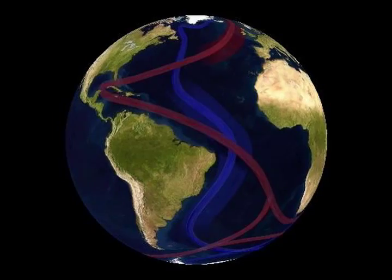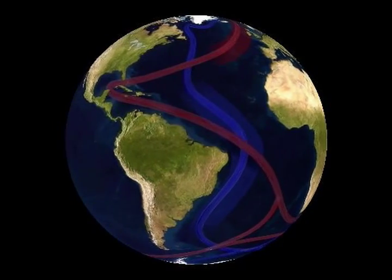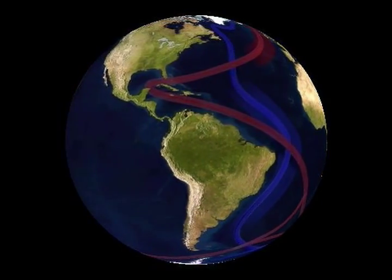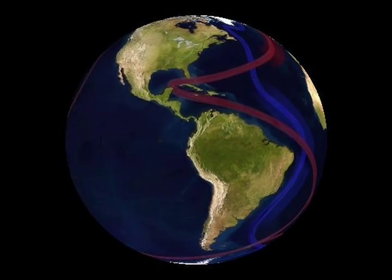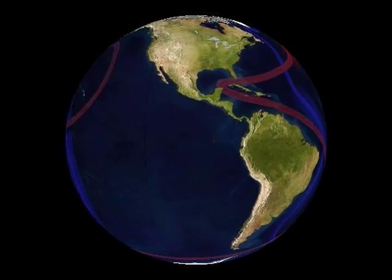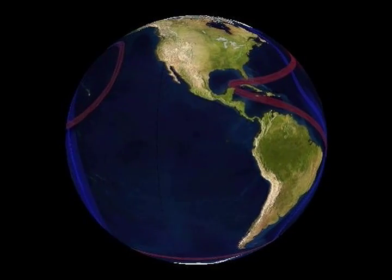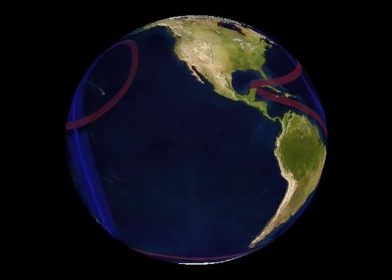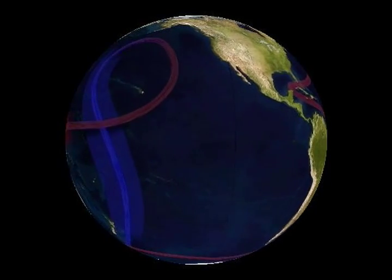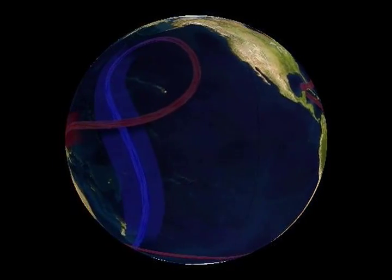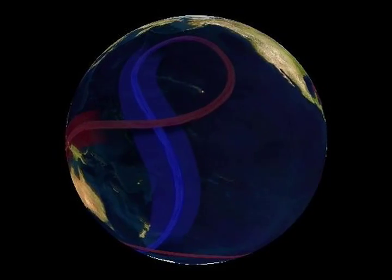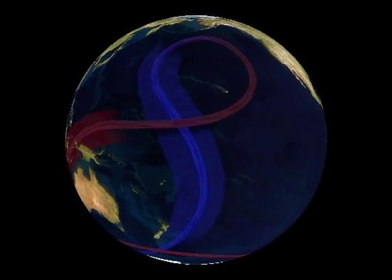And water is on the move in the world's oceans. Currents of water, like huge ocean rivers, move around the globe. Warm tropical waters, shaded red in this animation, run towards the poles. Cold polar waters, here shaded blue, return to the tropics. Endlessly cycling, these currents help regulate Earth's climate.